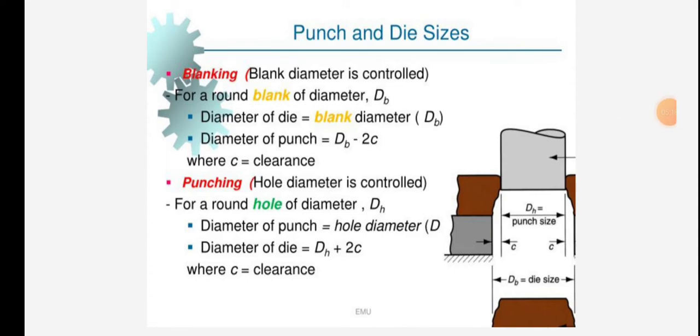Blanking: blank diameter is controlled. For a round blank of diameter DB, diameter of die equals blank diameter DB. Diameter of punch equals DB minus 2C, where C is the clearance. These are the formulas of the blanking process.